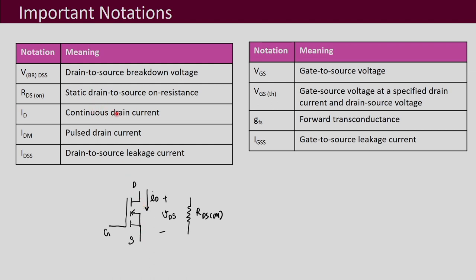Then the continuous drain current I_D — whatever is the maximum DC current that can pass through it continuously — that is the maximum current that will be specified. Then pulsed drain current: as we had discussed before when discussing diodes, pulses may be given to the MOSFET for some short time period. If given for a short time period, this peak current, called I_DM, will be much higher than the continuous drain current, and that will also be specified in the MOSFET data sheets.